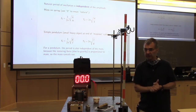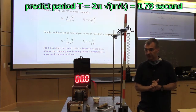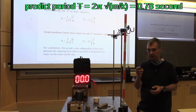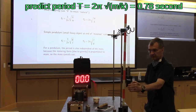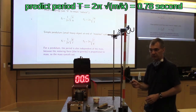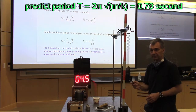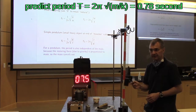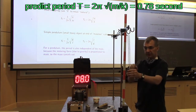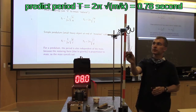If we let this thing bounce up and down 10 times, that should happen in 7.8 seconds. Let's see how well we did. [counts 0 through 10] That's pretty good. We predicted 7.8 seconds and we got 8.0 seconds.